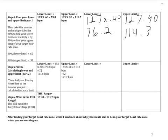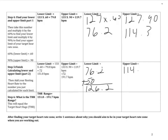In the calculations prior to this, we subtracted our resting heart rate. Now at this point, we have to add our resting heart rate back into the equation. So for the lower limit, I take 76.2 and I add 50, because that was my resting heart rate, and I get 126.2. For my upper limit, I take 114.3 and I add 50, which is my resting heart rate, and I get 164.3.